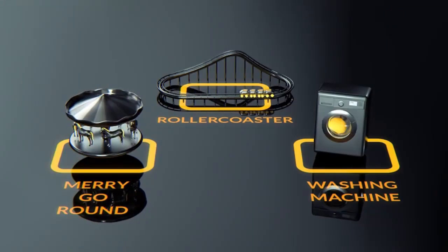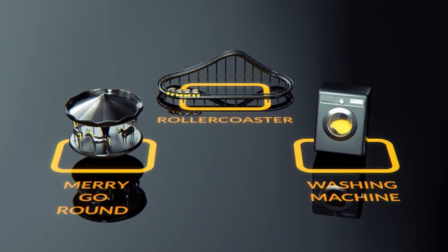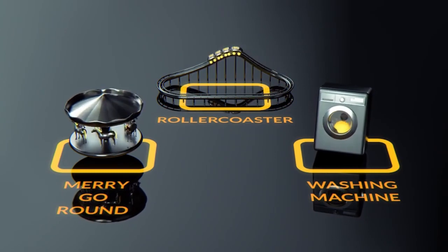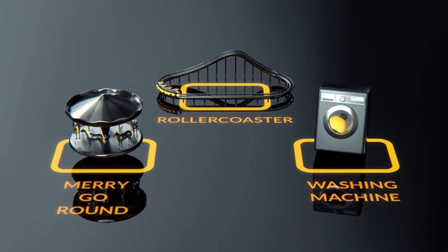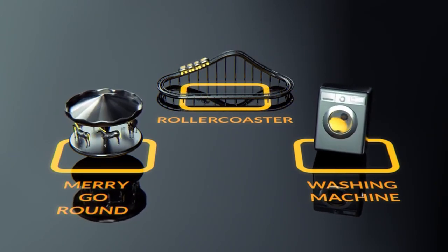Do you know which force is present on a merry-go-round, a roller coaster, and a washing machine? That's right, a centrifugal force - the outward force on a body moving in a curved path around another body. Go through the chapter to learn more.